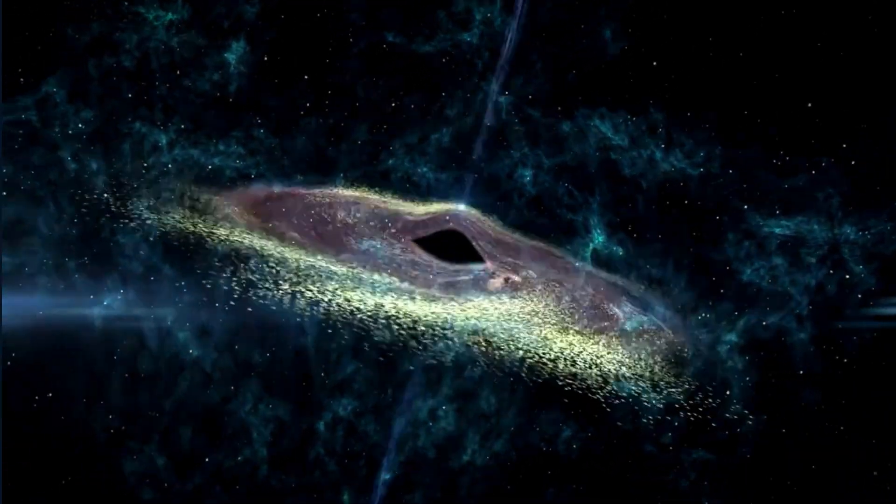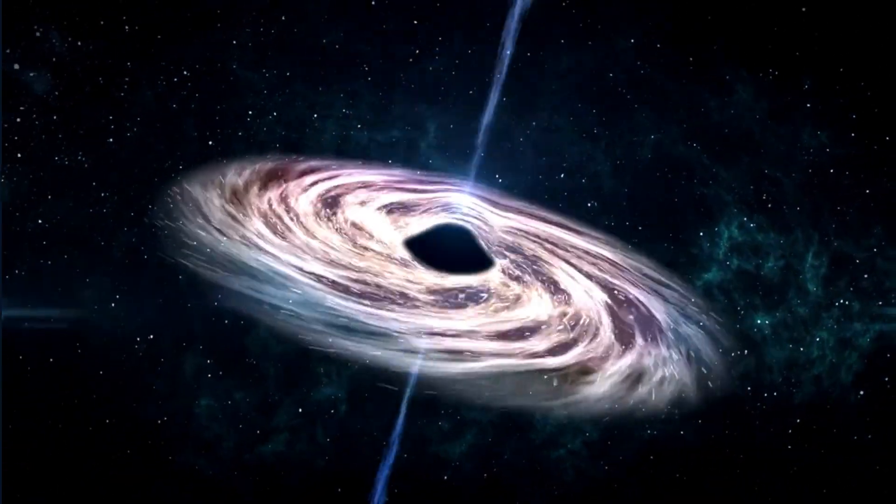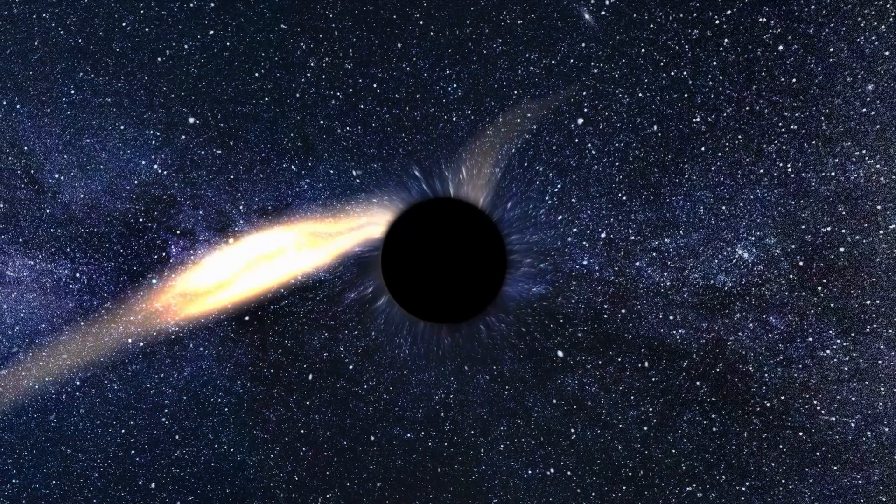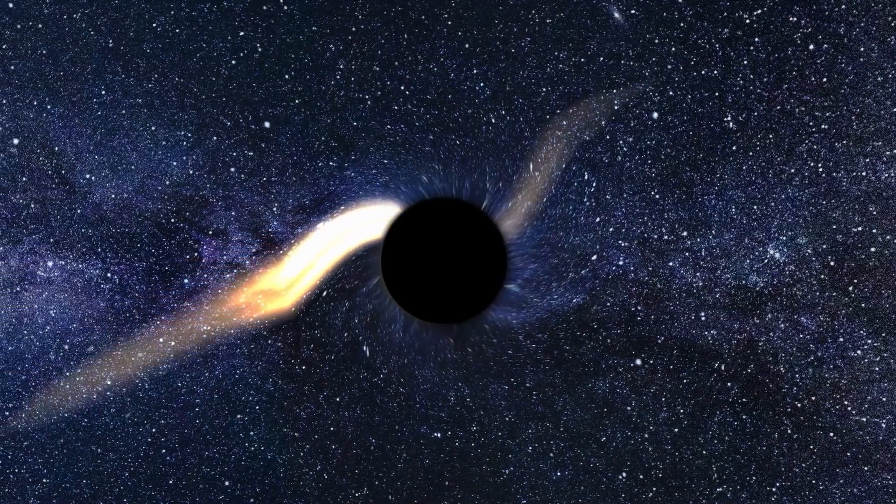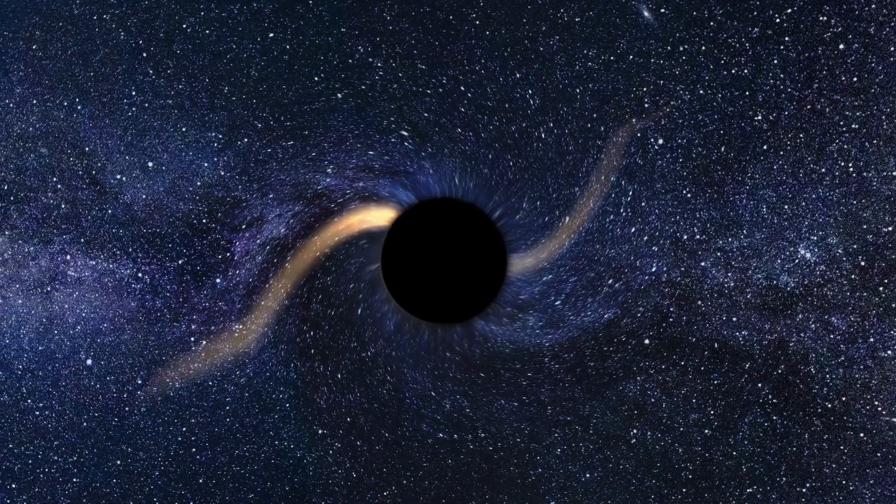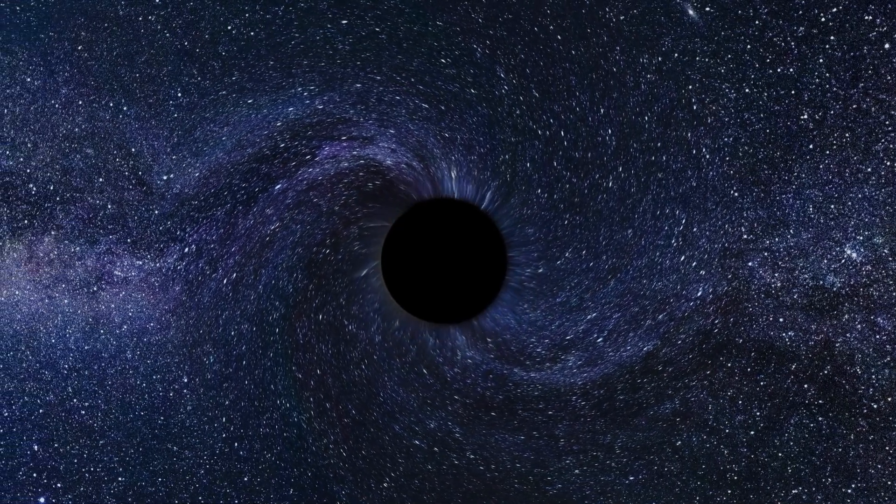Black holes are formed when massive stars die and their cores collapse under the weight of their own gravity. The immense gravitational pull of a black hole is so strong that nothing, not even light, can escape it, making them invisible to the naked eye.